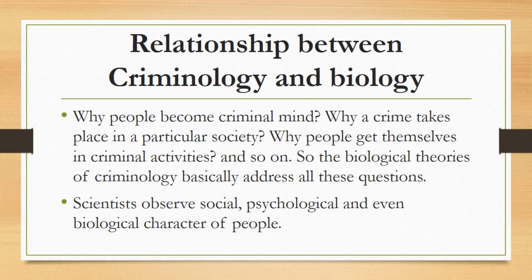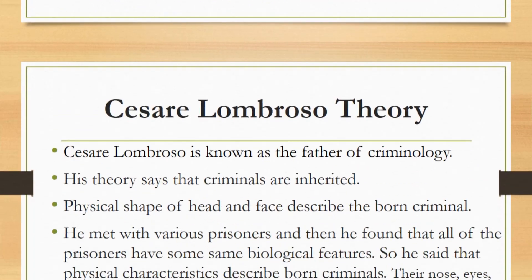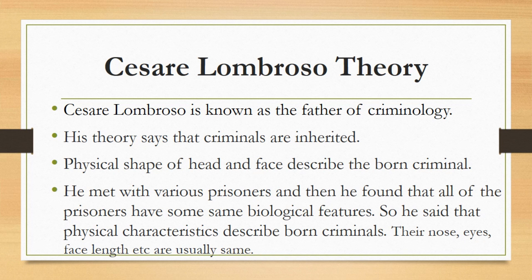After understanding the linkage between biology and criminology, we will now study biological theories of criminology. The first one is Cesare Lombroso's theory. Lombroso is known as the father of criminology. His theory says that criminals are inherited, meaning that criminals get their criminality from their ancestors. He maintained that the physical shape of the head and face describe the born criminal. Before presenting this theory, he did fieldwork by visiting various jails, met with various prisoners, and found that all of the prisoners share some of the same biological features.